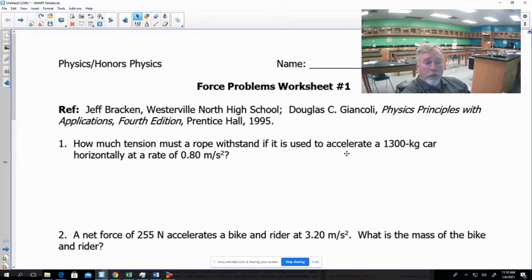For our first problem here, I always want you to start with drawing a free body diagram when we're solving Newton's second law problems. The free body diagram is kind of your guidebook. It helps drive everything when you're solving that problem. So let's look at our first problem. How much tension must a rope withstand if it's used to accelerate a 1300 kilogram car horizontally at a rate of 0.8 meters per second squared?